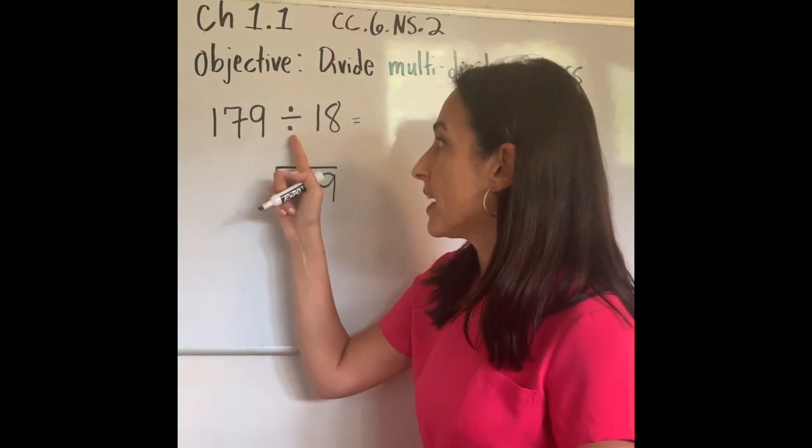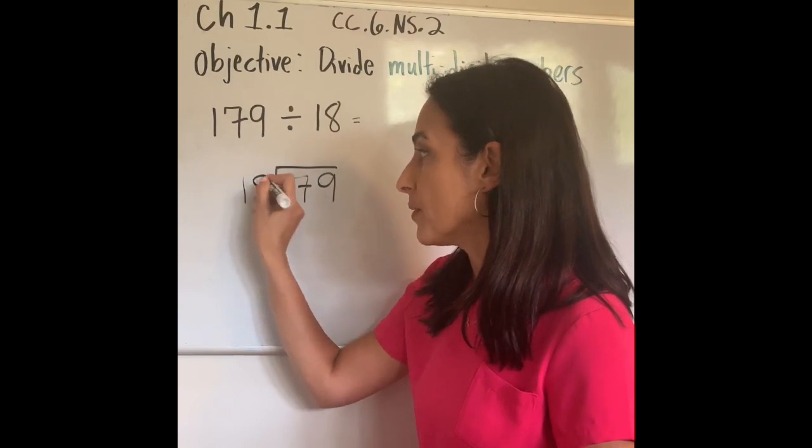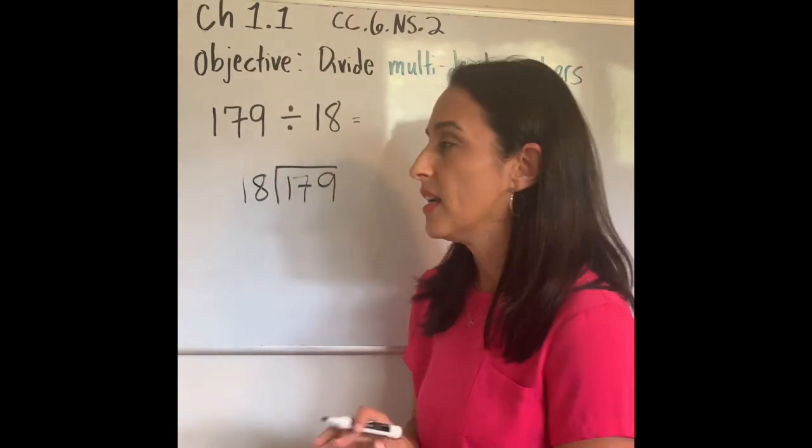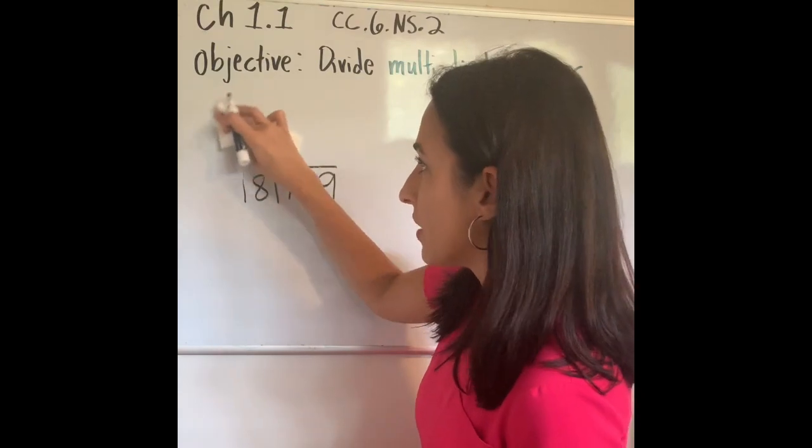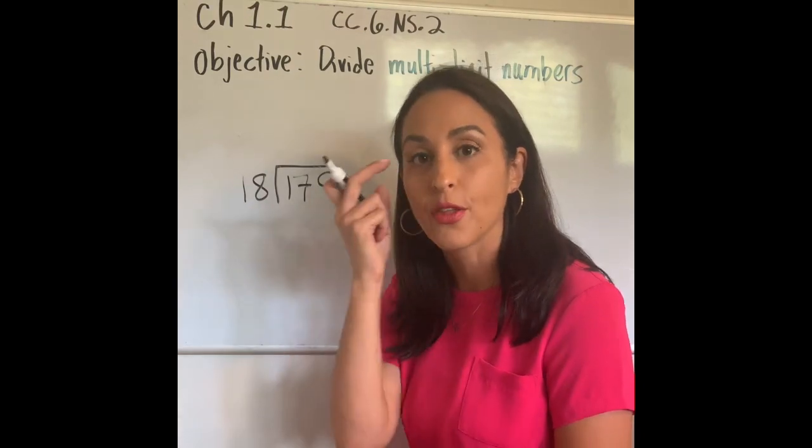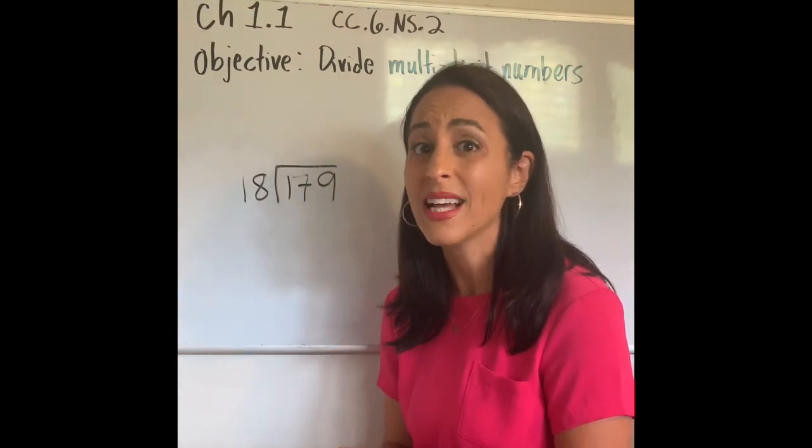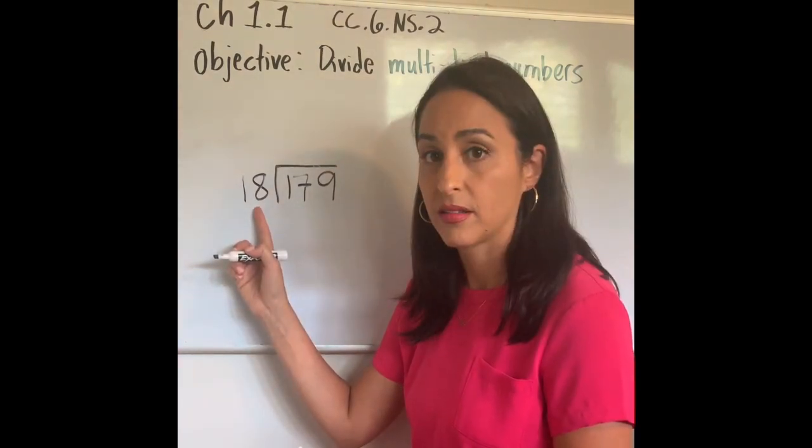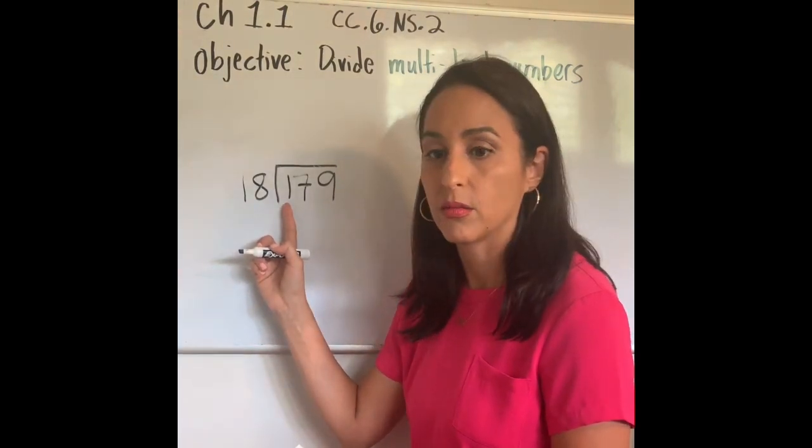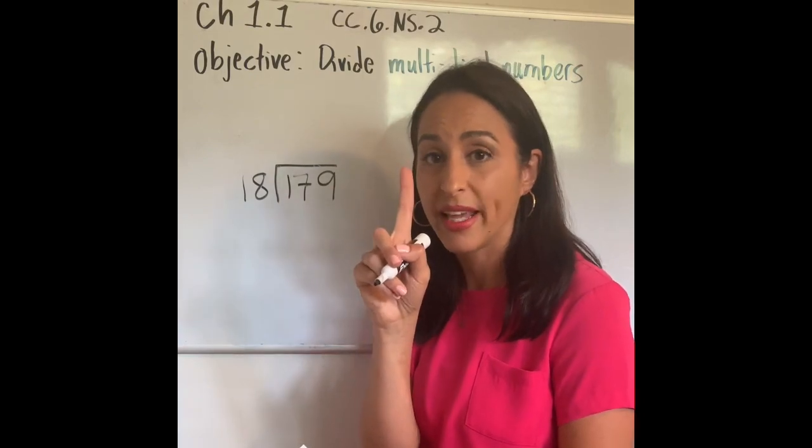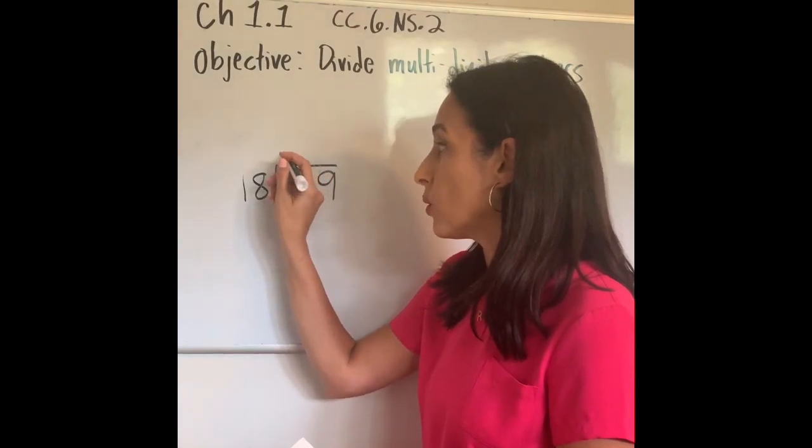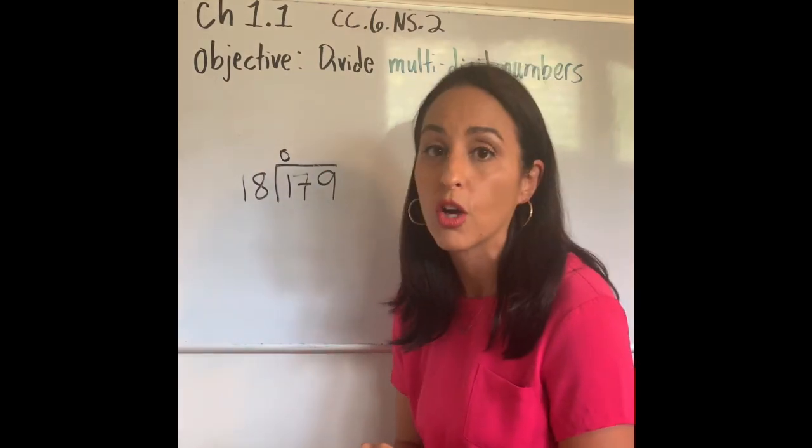179 divided by 18. 18 is a divisor—a visor hat you wear outside, so I just remember that 18 might be outside my little house. So I have 179 divided by 18. Now I have to think in my mind how many times can I multiply 18 so that I can get to 1? Well, 1 divided by 18, you can't make that happen. So I'm going to skip the one. I can put an X up here or I can put a 0 as a placeholder.